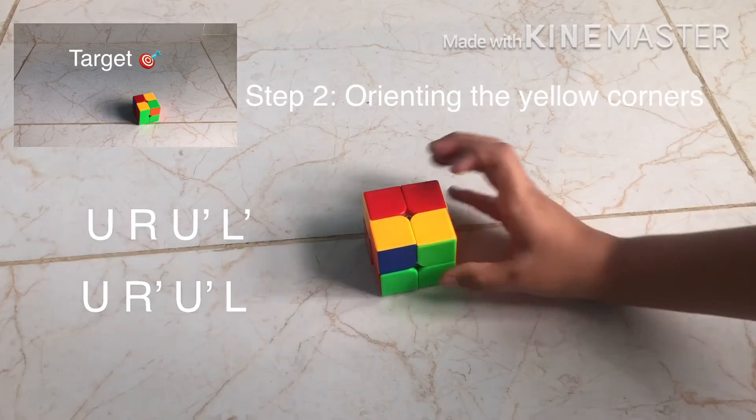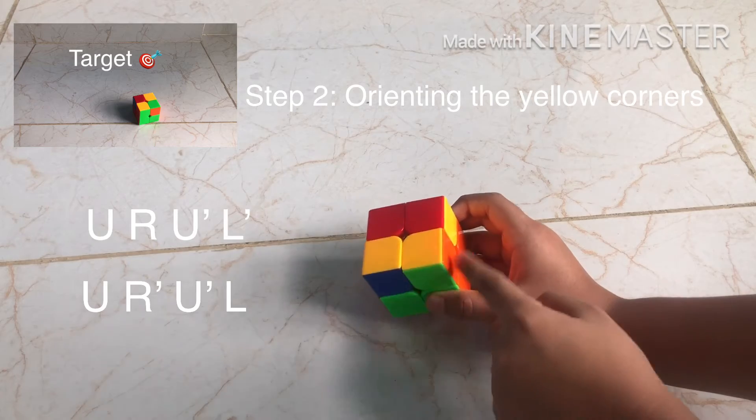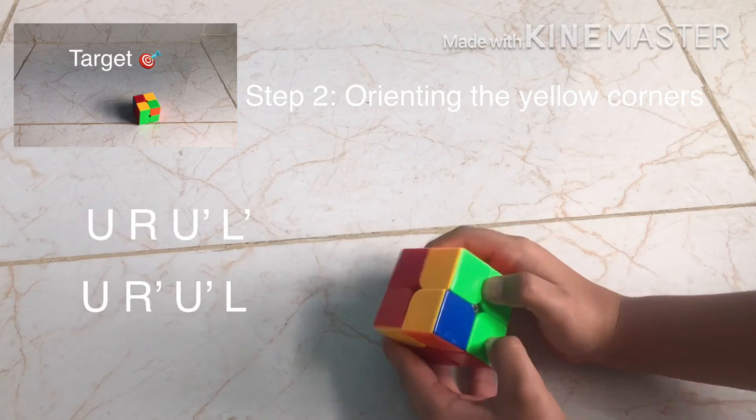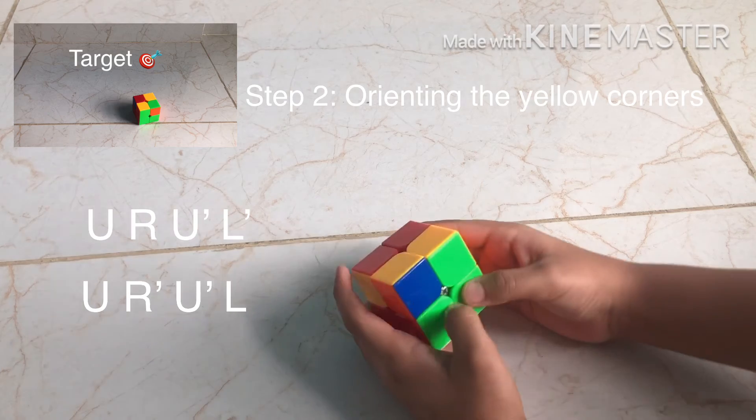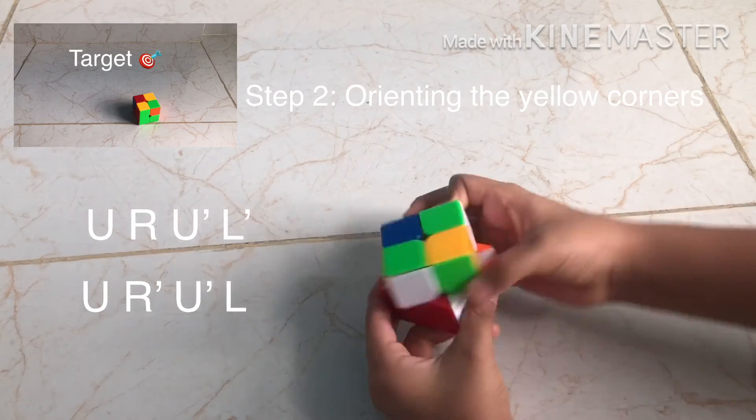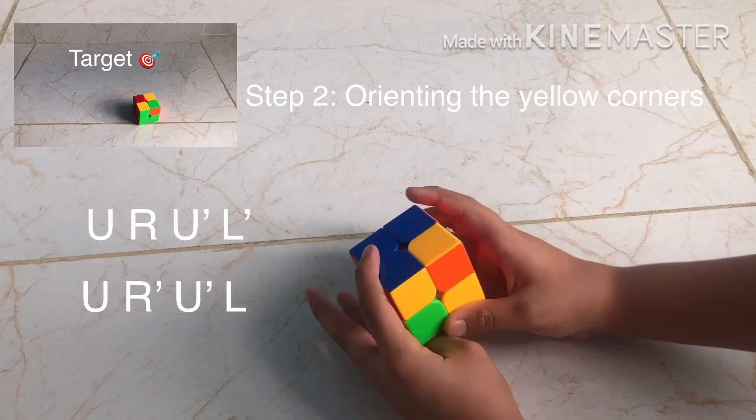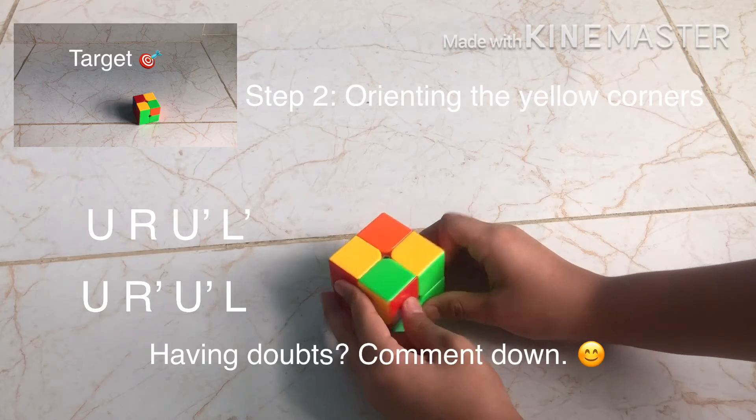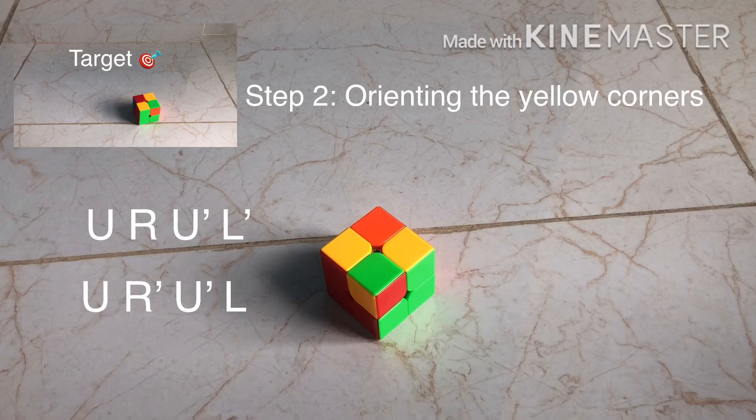But remember, if you get this state, that's too, that's very important. This state. So, leave this state. Leave these both corners and concentrate on the other corners. Then, the 2x2 cube is very easy. You should be able to solve it.